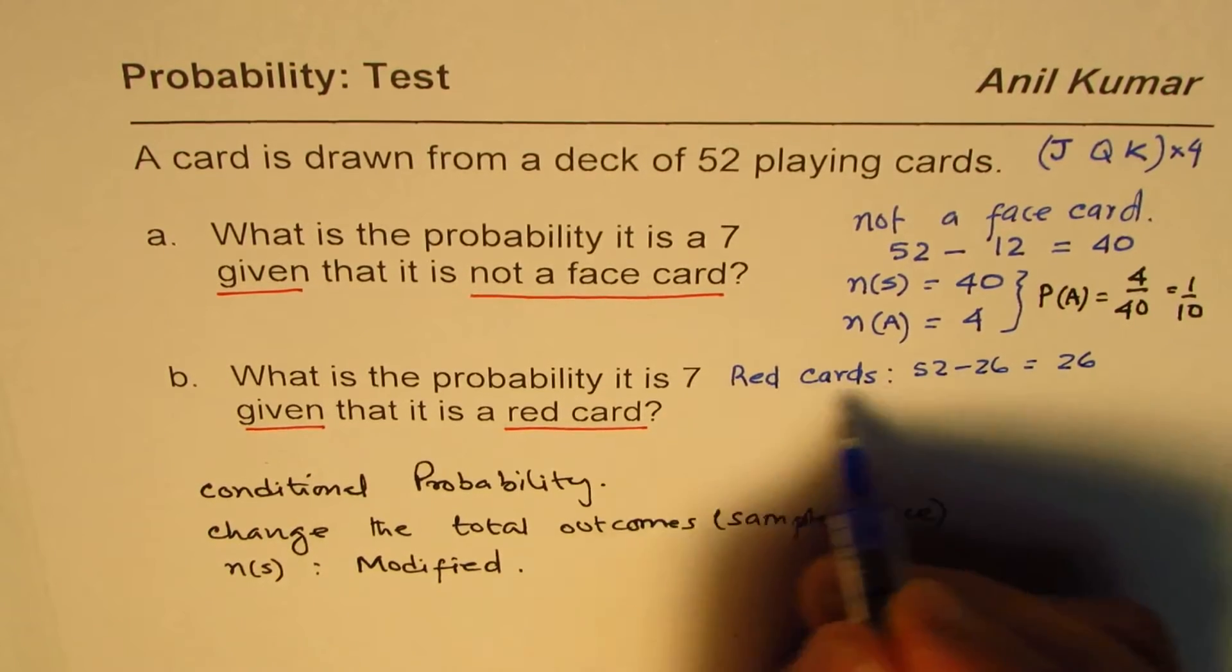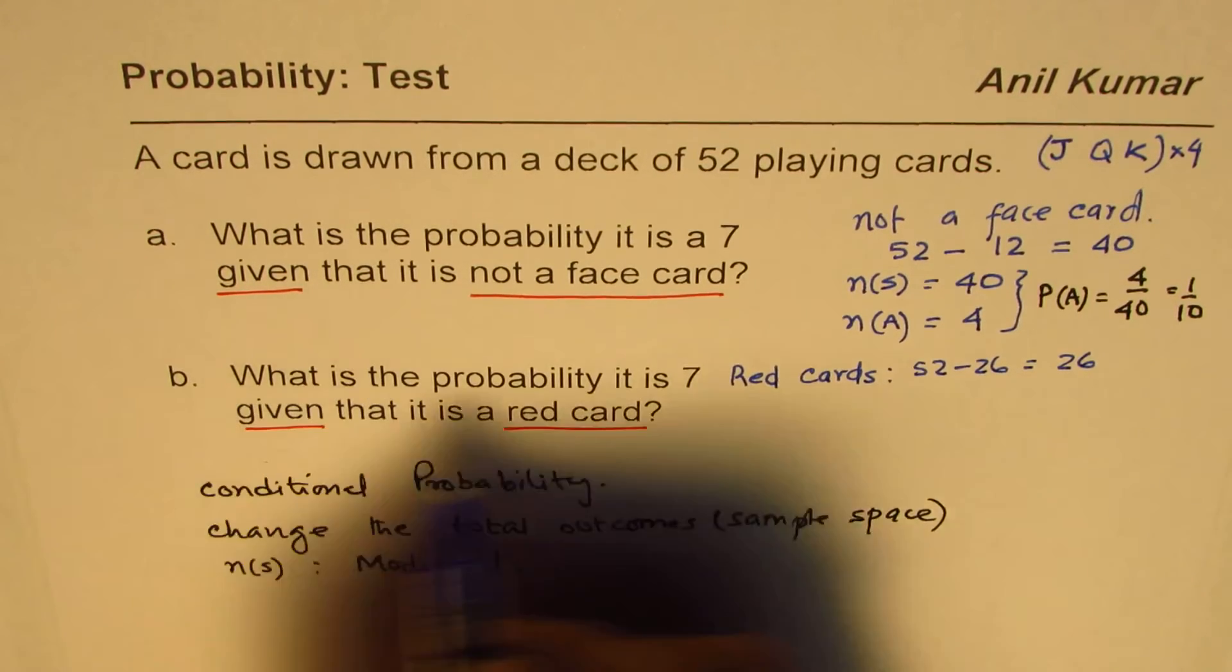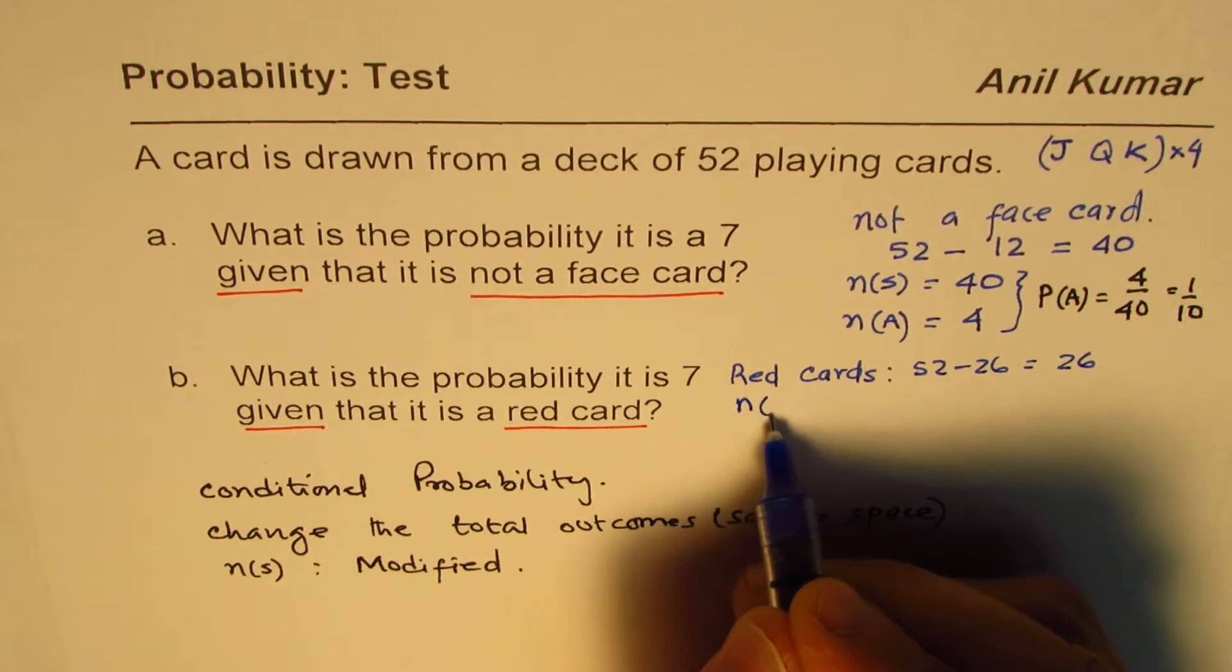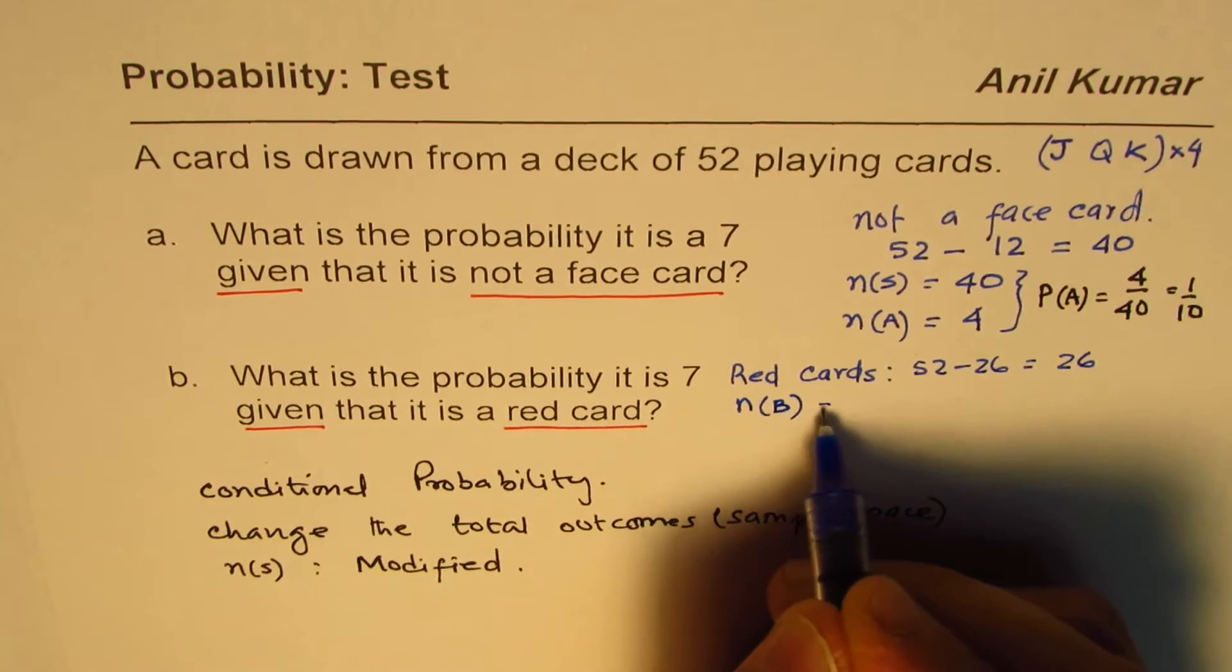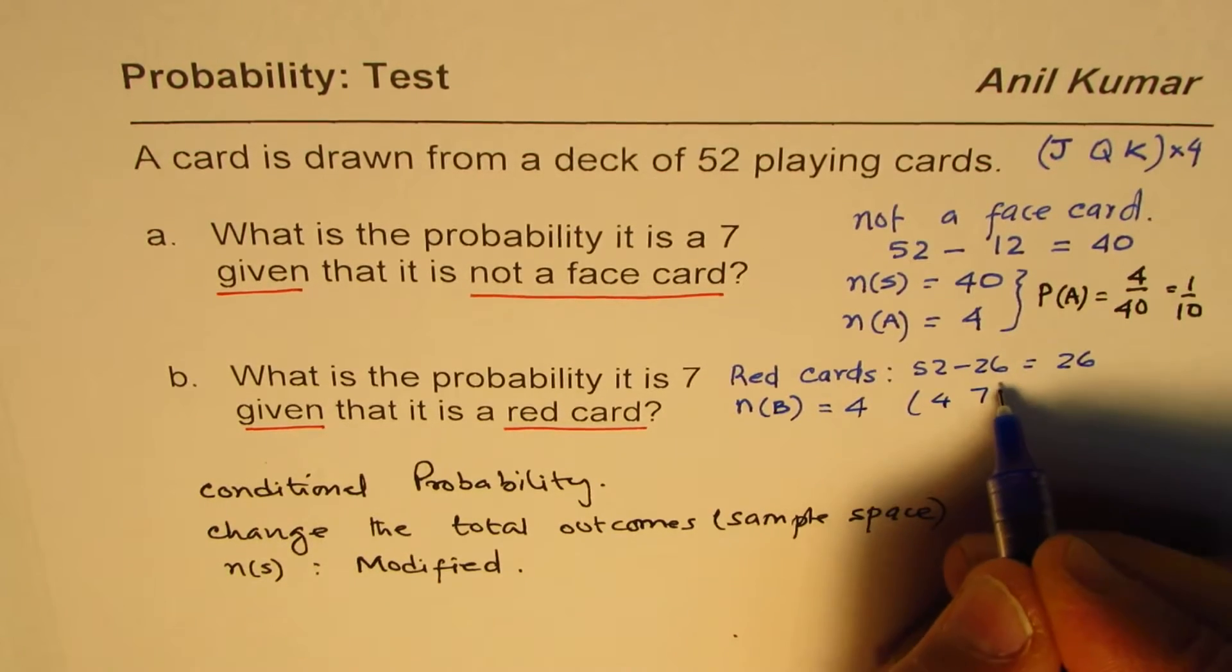We can see here in this particular case that event B, let's call this as event B, has 4 probable cases. There are four sevens, this means four sevens, right?